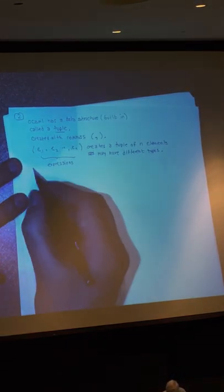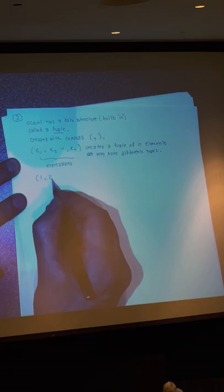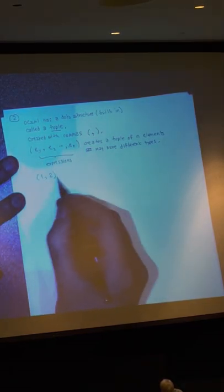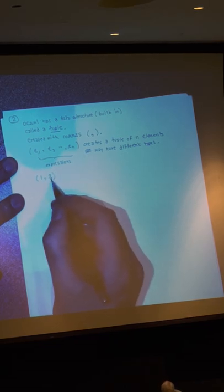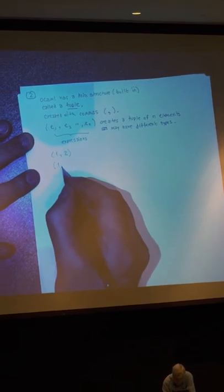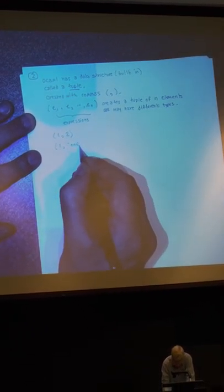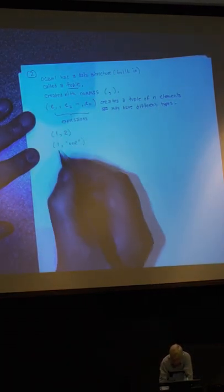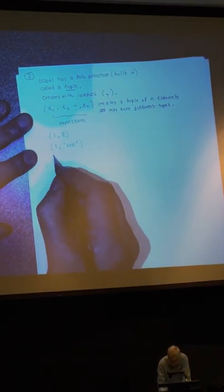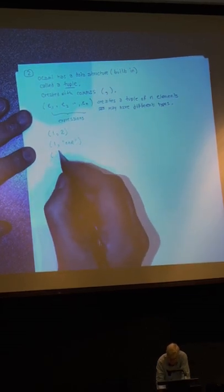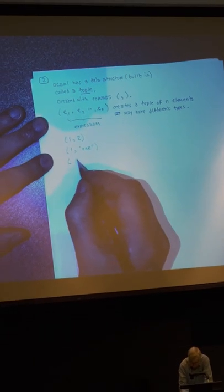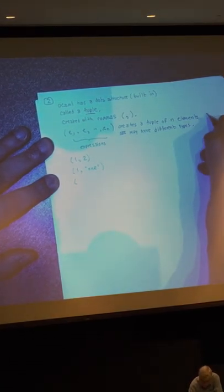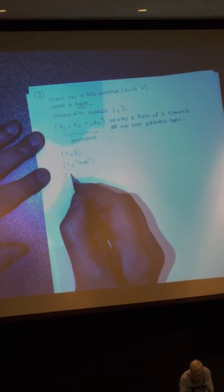For example, I could write something like (1, 2), and that would give me a tuple with two components, one and two. I could write a tuple with one and a string, or I could write a tuple that has some kind of mixture of things.